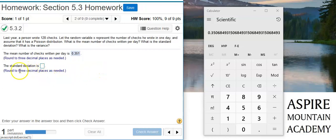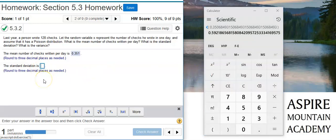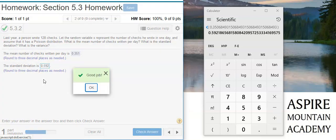Now the next part of this problem asks for the standard deviation. For a Poisson distribution, the standard deviation is simply the square root of the mean. I've got the mean value still on my calculator, so all I do is press my square root button, and there is my standard deviation. Again, I'm asked to round to three decimal places. Good job!